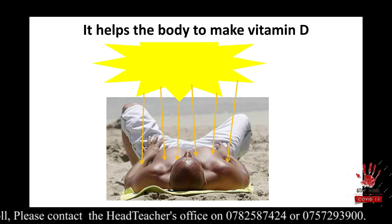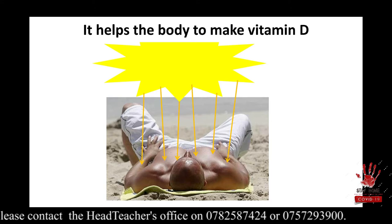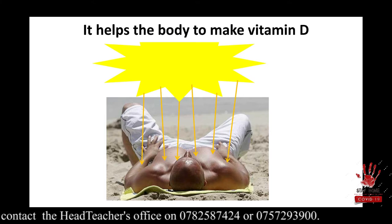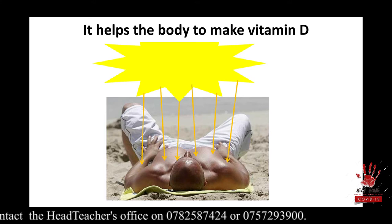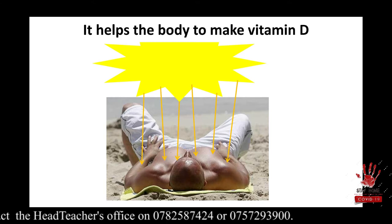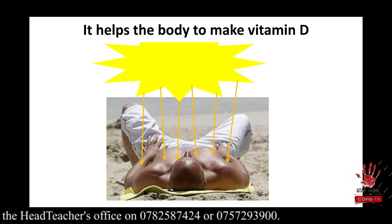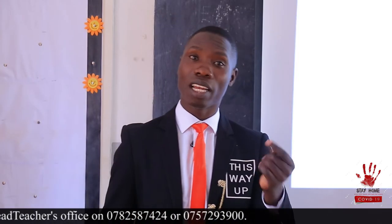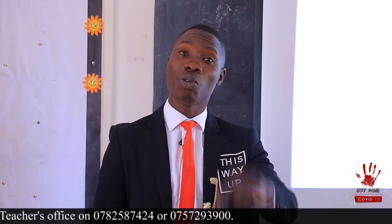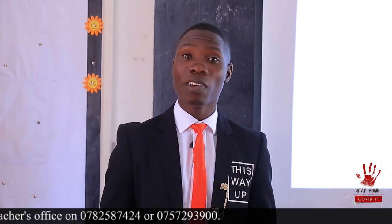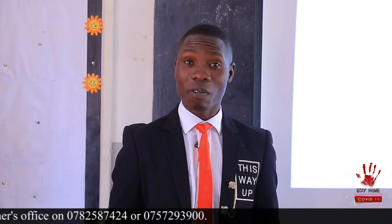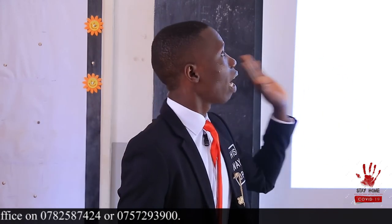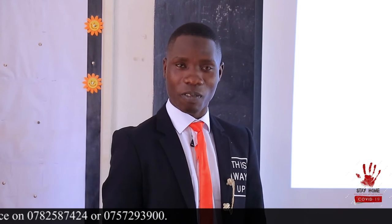My friend there is enjoying the heat from the sun. Sunshine helps the body to make vitamin D. In our bodies or on our skin there is a pigment called melanin. That melanin traps sunshine that the body uses to make or produce vitamin D. So sunshine helps our bodies to make vitamin D.